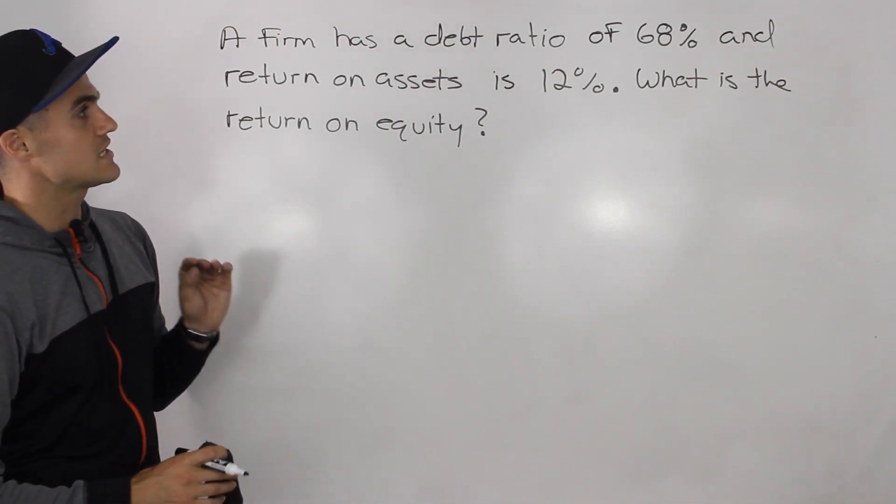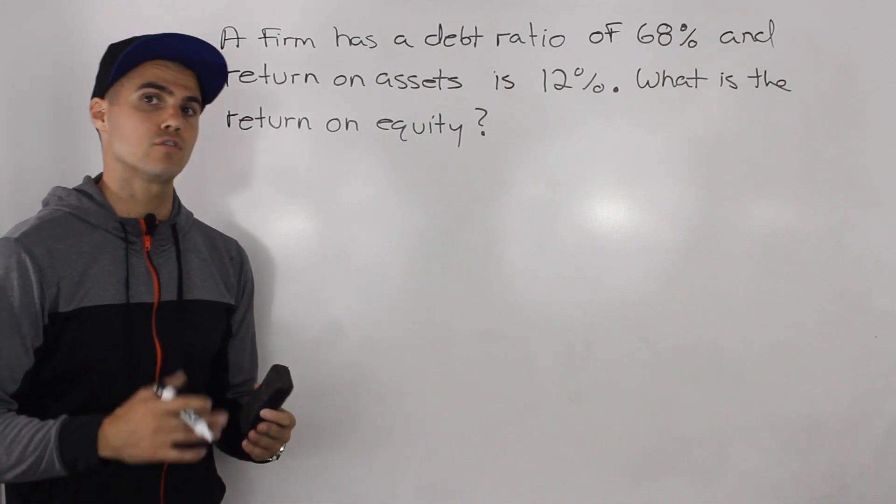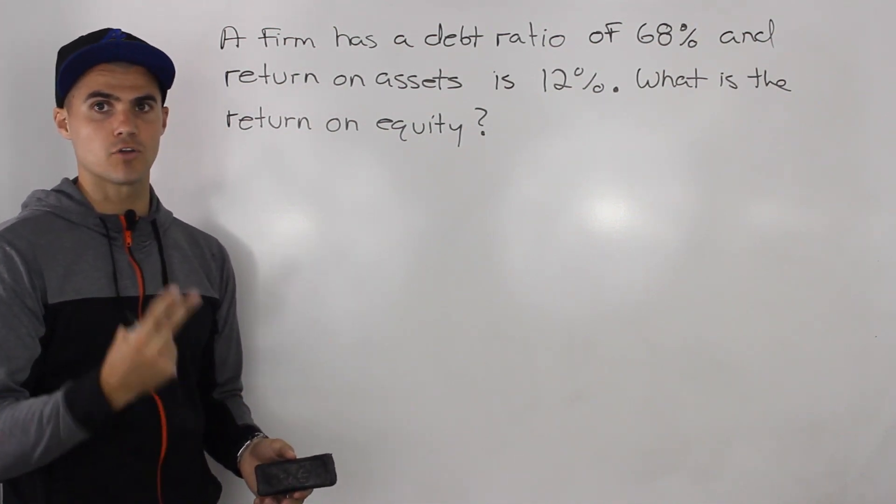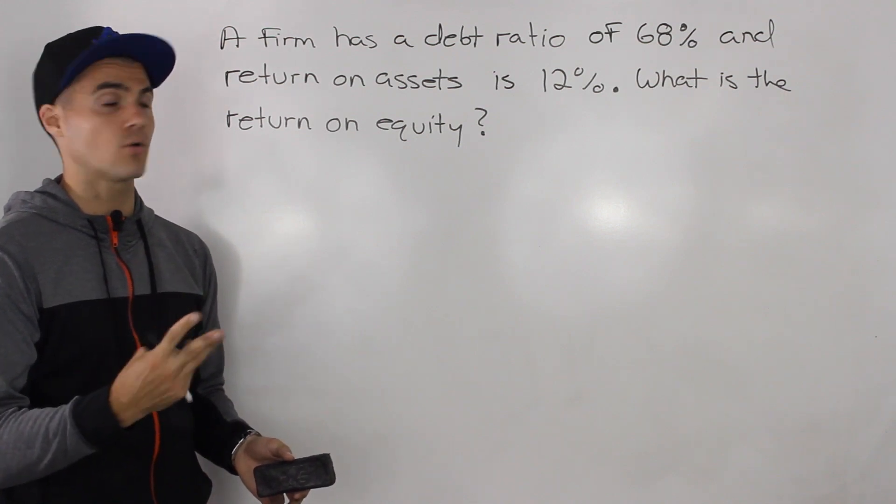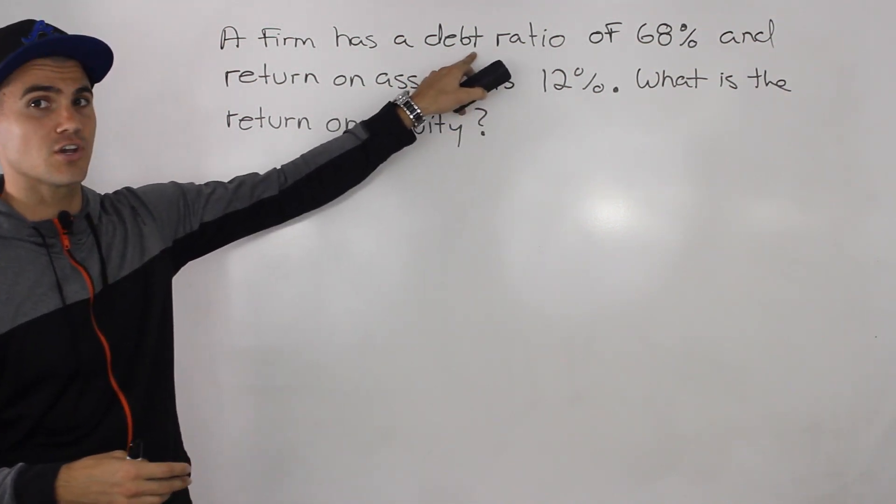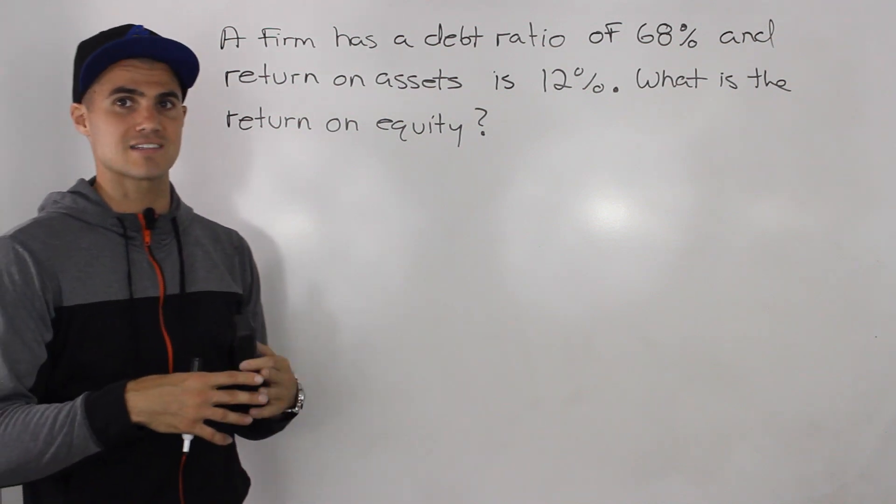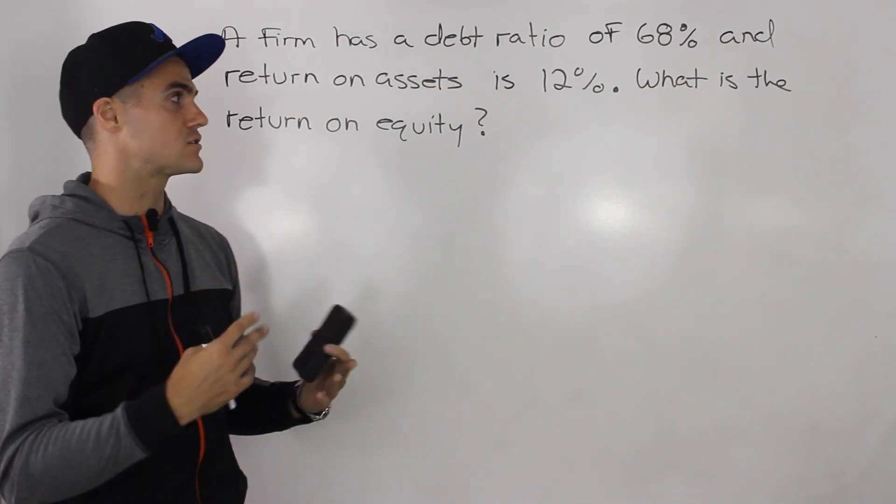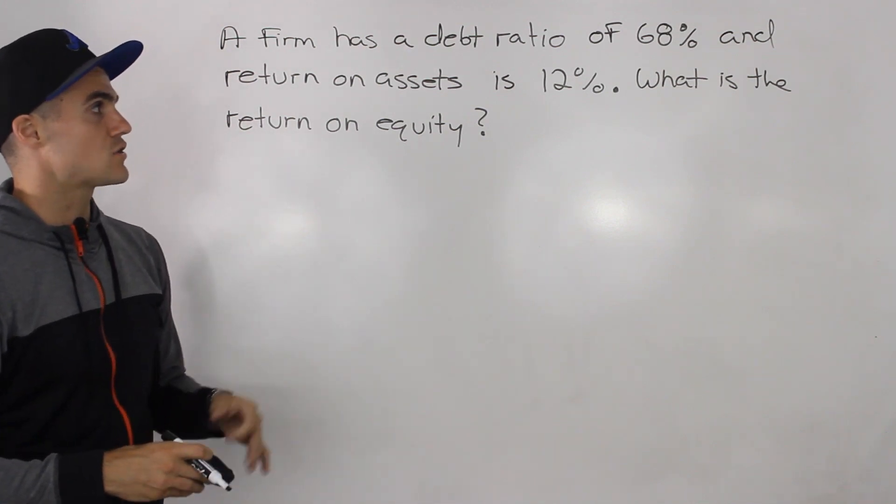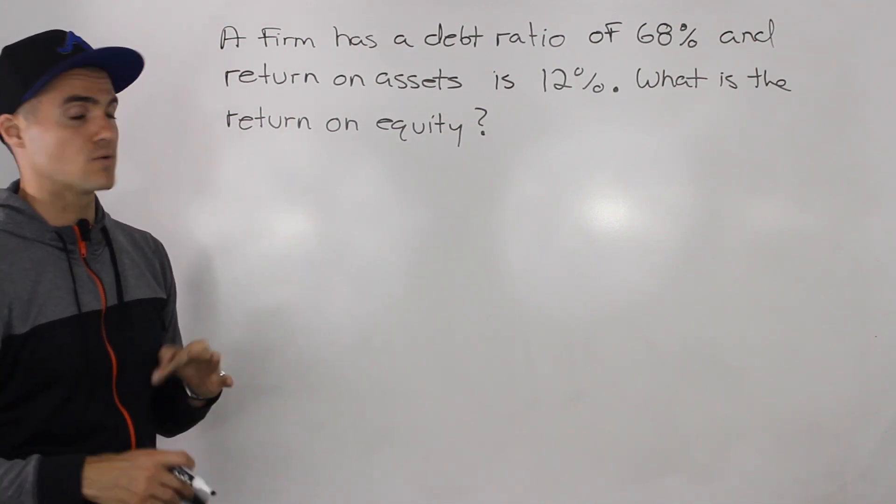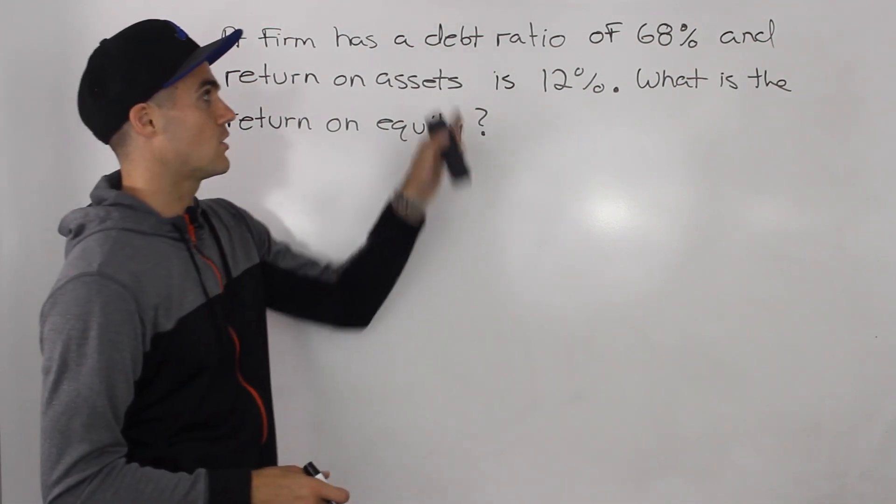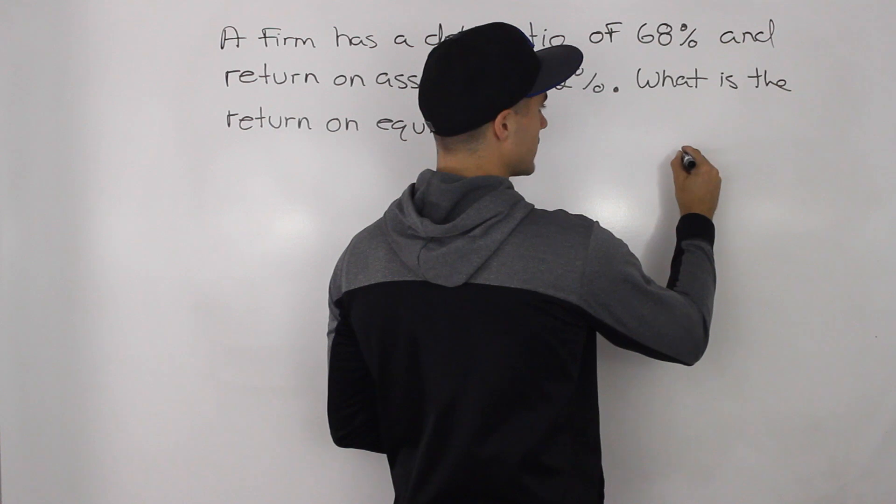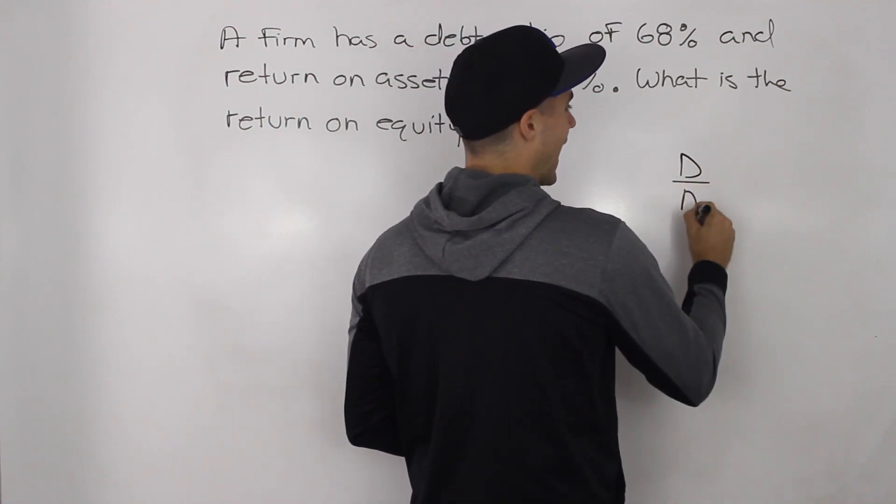So let's go through this stuff. A firm has a debt ratio of 68%. Now remember, if you are given the debt to equity ratio, equity multiplier, or the total debt ratio, or in this case, it's just called the debt ratio. The debt ratio is the same as the total debt ratio. Both of those can be used interchangeably. So if you're given one of those three ratios, you always want to make a mini balance sheet. So the debt ratio, which we know is what? Debt over assets.